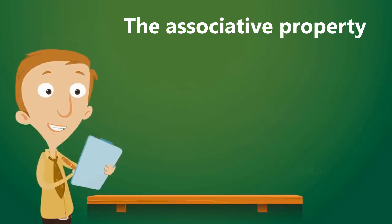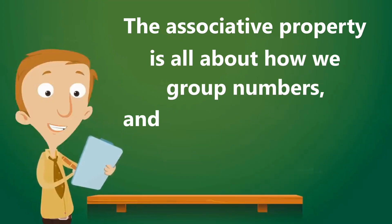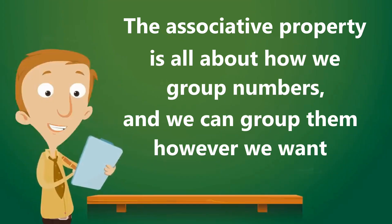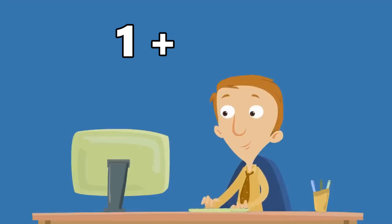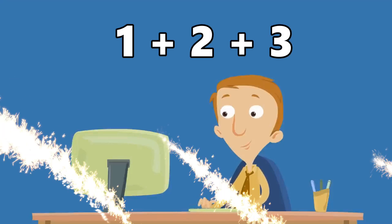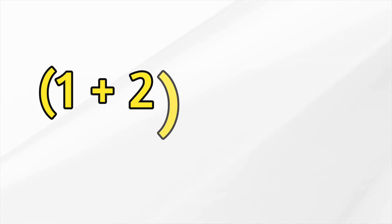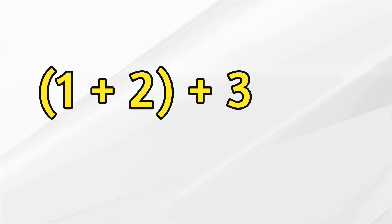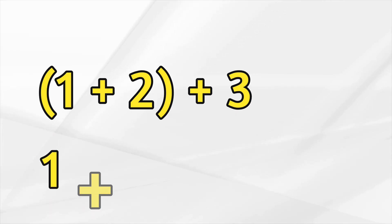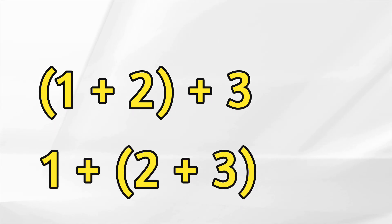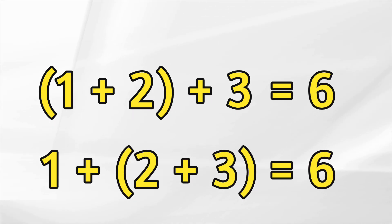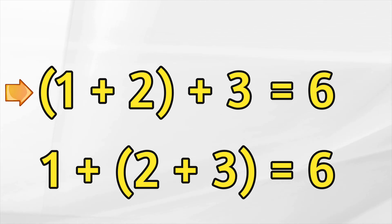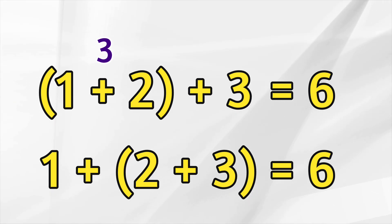The associative property is all about how we group numbers, and we can group them however we want. Let's say we're adding 1 plus 2 plus 3. We can group the 1 and the 2: (1 plus 2) plus 3. Or we can group the 2 and the 3: 1 plus (2 plus 3). Either way, the answer is 6. Let's check: 1 plus 2 equals 3, and 3 plus 3 equals 6.